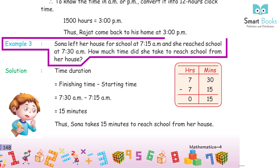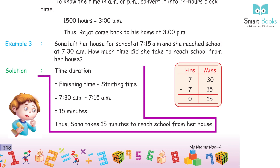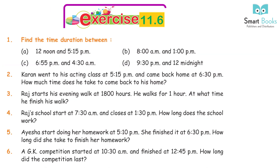Example 3: Sona left her house for school at 7:15 AM and reached school at 7:30 AM. How much time did she take to reach school? Solution: Time duration = Finishing time − Starting time = 7:30 AM − 7:15 AM = 15 minutes. Thus Sona takes 15 minutes to reach school from her house.